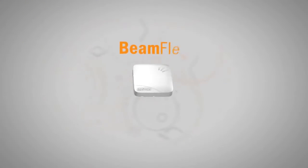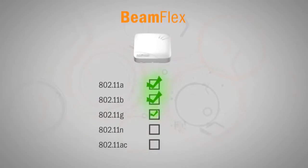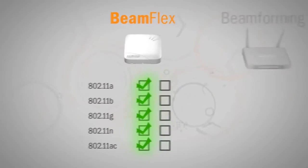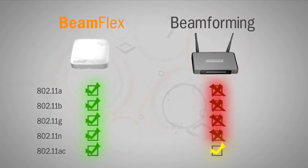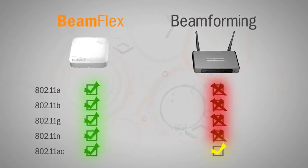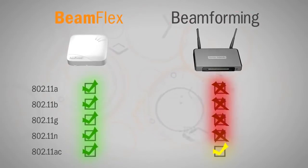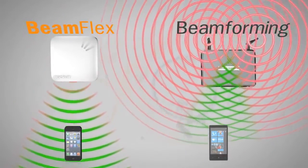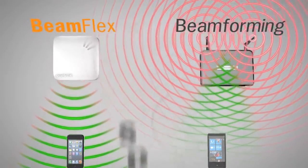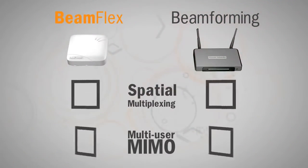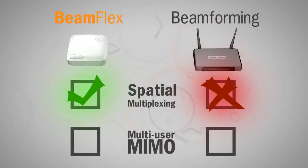One of the greatest benefits of BeamFlex is that it's inherently compatible with all Wi-Fi technologies. On the other hand, transmit beamforming only provides mild gains in very specific situations. It's only supported by a limited subset of clients and it does very little to reduce Wi-Fi noise. In addition, the ability to use throughput enhancing techniques such as spatial multiplexing and multi-user MIMO are in direct conflict with the use of beamforming.